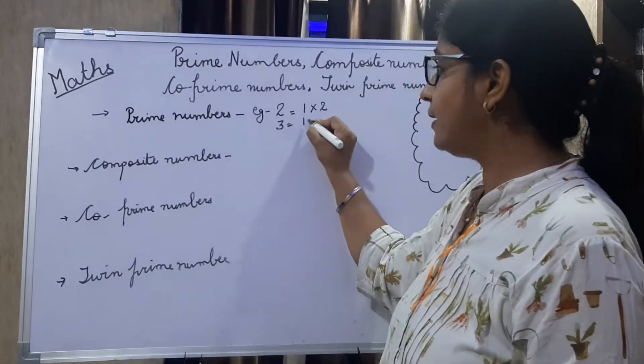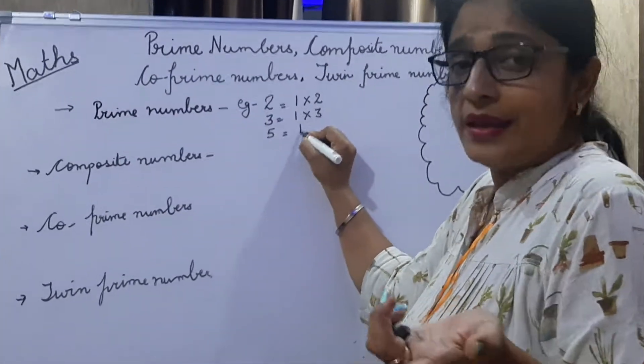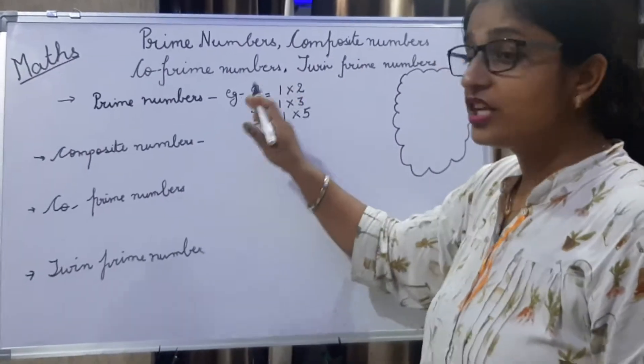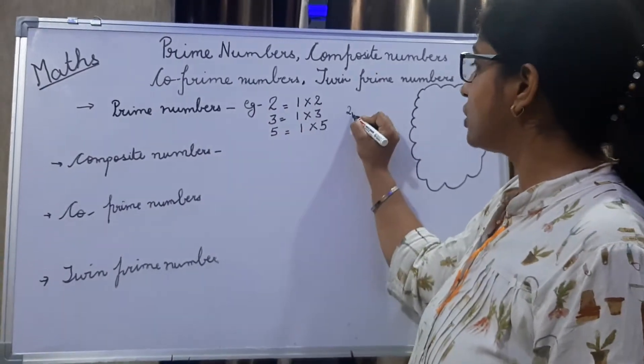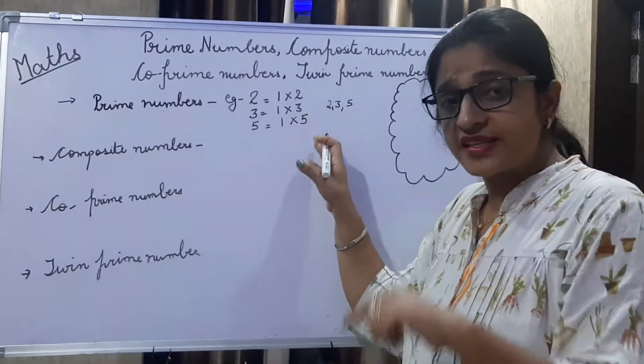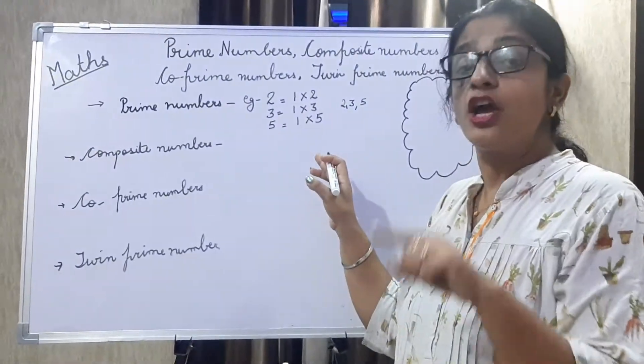Three has factors one and the number itself three. Five has factors one and the number itself five. So these numbers two, three, five, which have factors one and the number itself, which are divisible by the number itself and one.